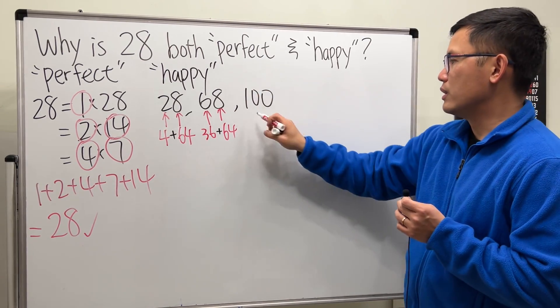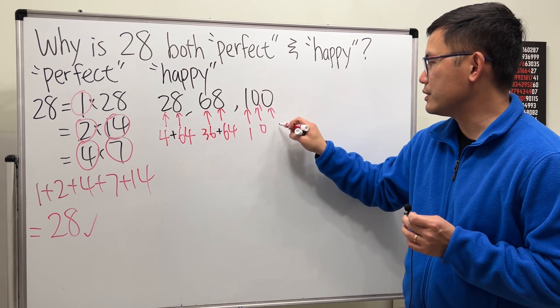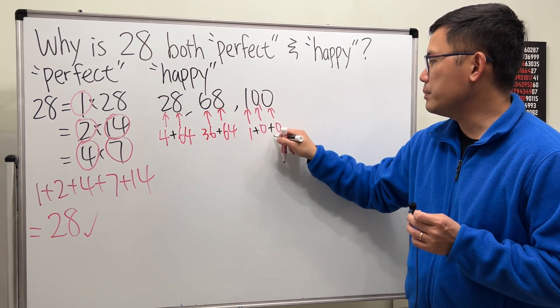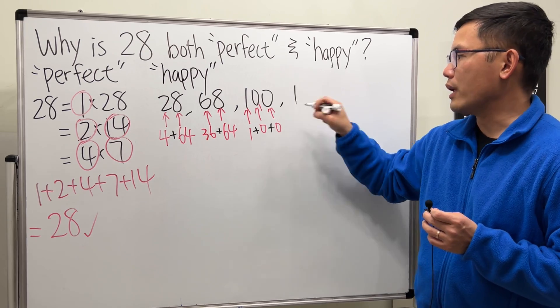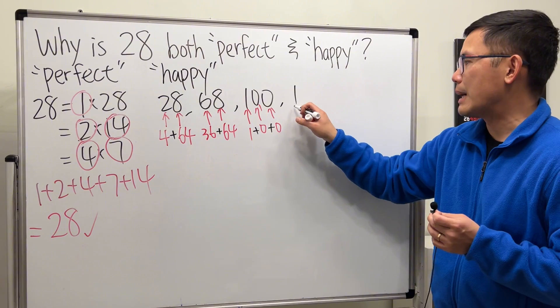1 squared is 1, and this right here is just 0, and this right here is just 0. So, when we add them up, this right here is just equal to 1. And guess what? If you end up with 1, this is always going to be 1. So we stop right here.